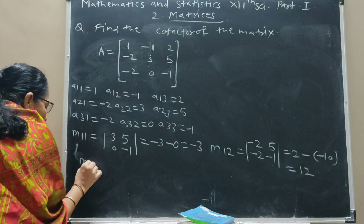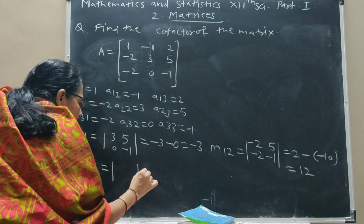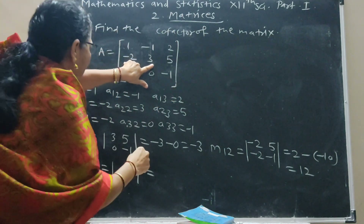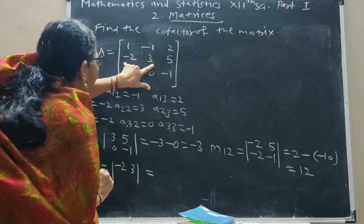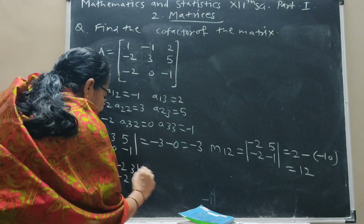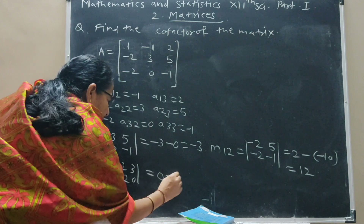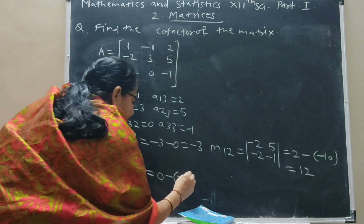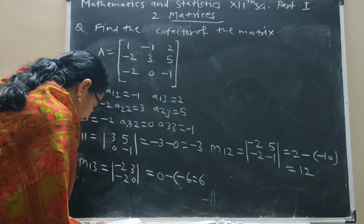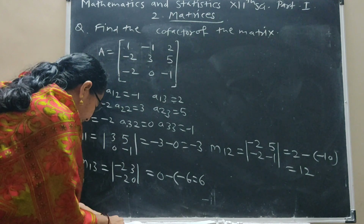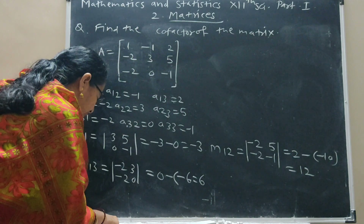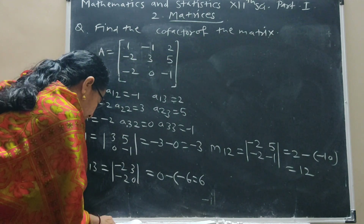Now M13: determinant, first row, third column deleted. The remaining elements are minus 2, 3; minus 2, 0. Product: 0 minus (minus 6), which is 6. So M13 = 6. Therefore the first row minors are: M11 = minus 3, M12 = 12, M13 = 6.